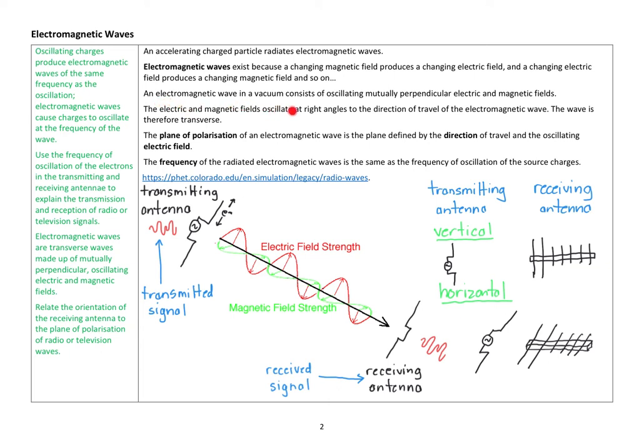An electromagnetic wave in a vacuum consists of oscillating mutually perpendicular electric and magnetic fields. It's basically just what I said, but noting that, in the same way as it happens in the previous topic, the electric field and the magnetic field are always perpendicular to each other. The electromagnetic fields oscillate at right angles to the direction of travel of the electromagnetic wave. The wave is therefore transverse.